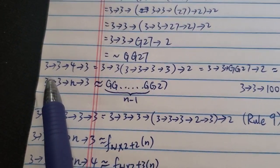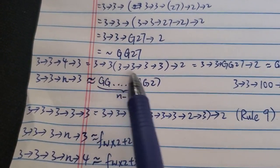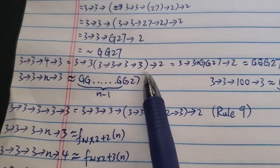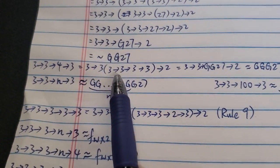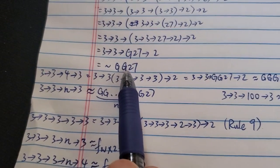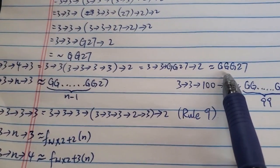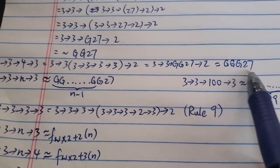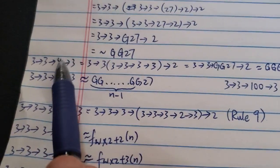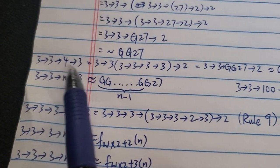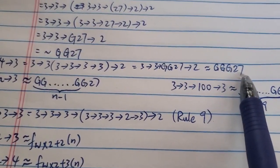And then the next example we're going to look at is 3→3→4→3. So again, you apply the same rule over here, rule 8. And then as you can see, we already know 3→3→3→3→3 is around G of G27. So therefore, this number is around G of G of G27. So just changing the third number from 3 to 4, you get a way, way, way, way bigger number.